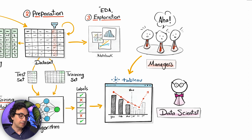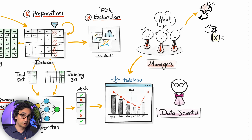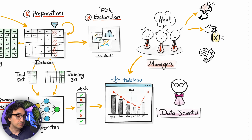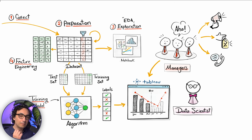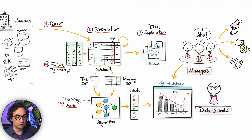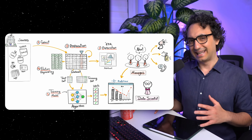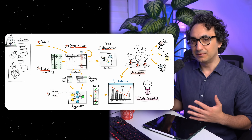Now the business users have a clearer picture of what could happen in the future, and they start planning actions — launching retention campaigns, sending offers to at-risk customers, or having the sales team reach out directly. This is the most beautiful moment as a data scientist: you're not just building a fancy model, you're genuinely helping the business see what's coming and act on it.